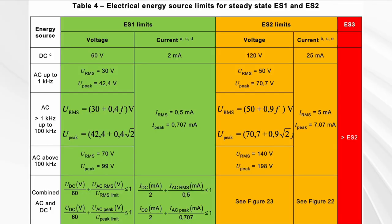To know what the limits are for voltage and current, it depends on the frequency, whether it's DC or AC, and so on. For example, the simplest case: if it's DC current, no higher than 60 volts and no higher than 2 milliamps, it's ES1. If it gets higher on any one of these dimensions, it becomes ES2, and higher still, ES3. This covers a long table.